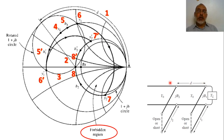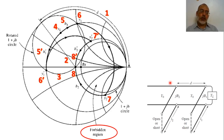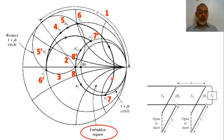This region is called the forbidden region — the region where we cannot match loads allocated inside this circle. This is one disadvantage of the double stub tuning circuit which does not appear in single stub tuning. In single stub tuning there is no forbidden region, but in double stub tuning we have a forbidden region. If Y-load is located inside the forbidden region, we cannot match this load. In the next video we will present an example for double stub tuning circuit.